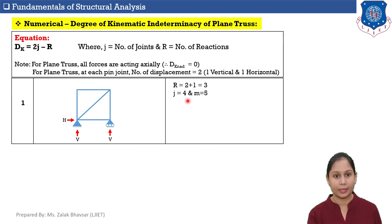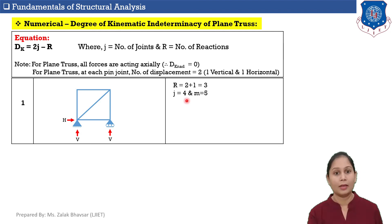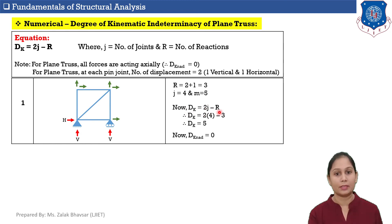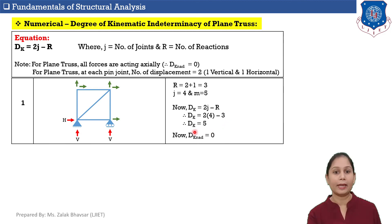Number of joints of the truss equals 4. Number of members equals 5. Putting values into the equation: DK equals 2J minus R equals 2 times 4 minus 3 equals 5. This means the total number of possible displacements of this given truss is equal to 5.